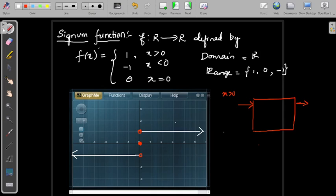When input is negative, x less than 0, output is always equal to minus 1. When input is equal to 0, output is always equal to 0.